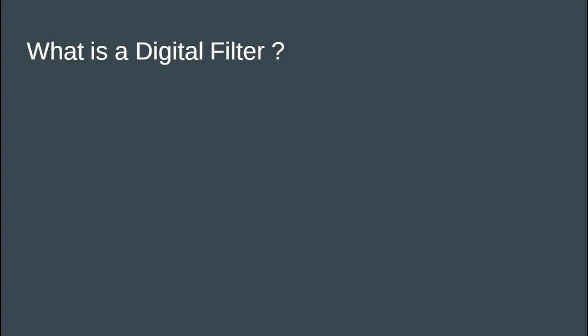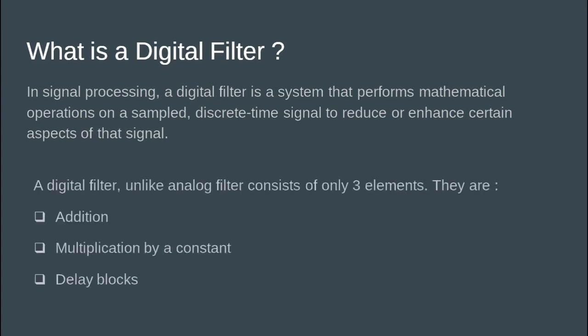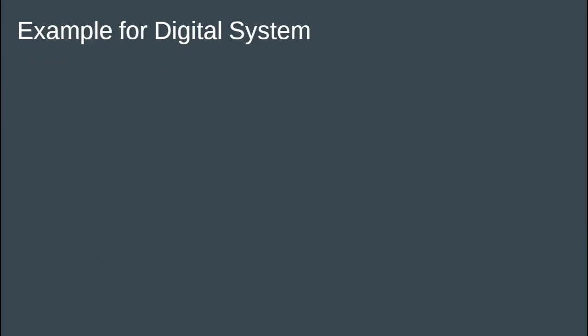What exactly is a digital filter? In signal processing, a digital filter is a system that performs mathematical operations on a sampled discrete-time signal to reduce or enhance certain aspects of that particular signal. A digital filter, unlike an analog filter, consists of only three elements: adder, multiplier, and a delay element.